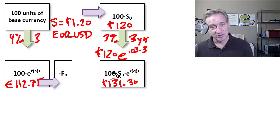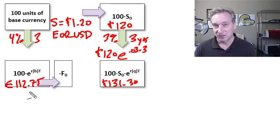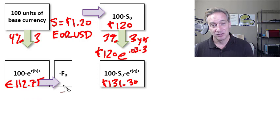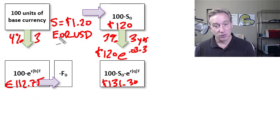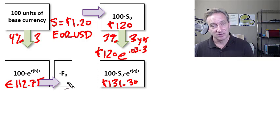But I need an apples to apples comparison. So at the, that's at the end of the three years, I want to be delivering 112.75 euros and getting back U.S. dollars. Now, in order to be indifferent at time zero, I need to expect that the dollars coming back are equal to 131.3.